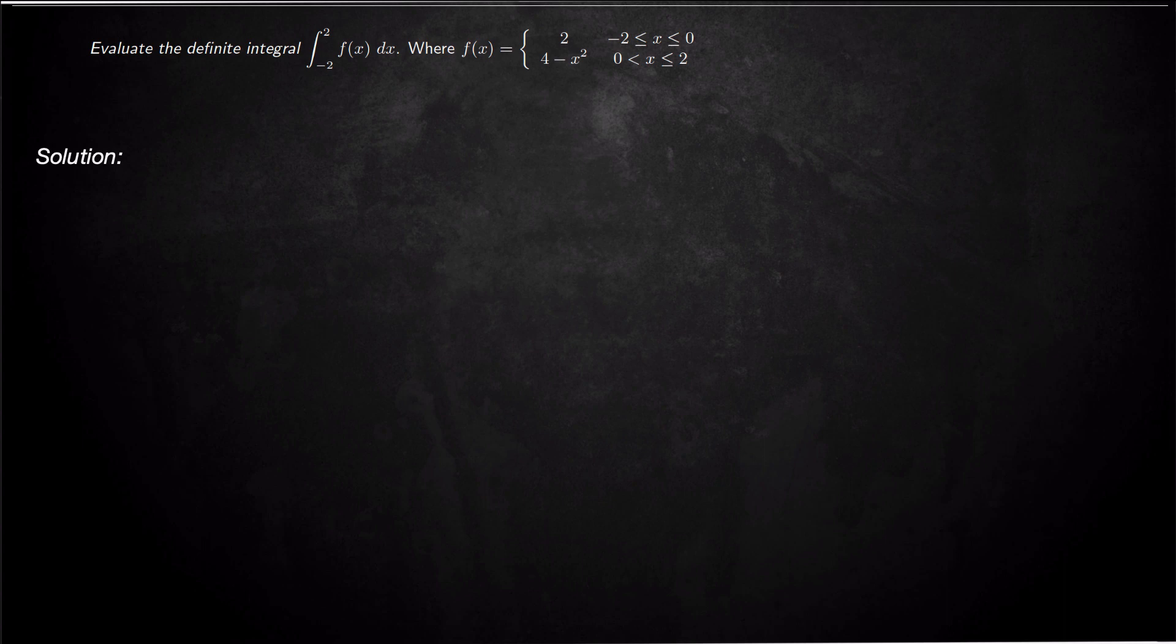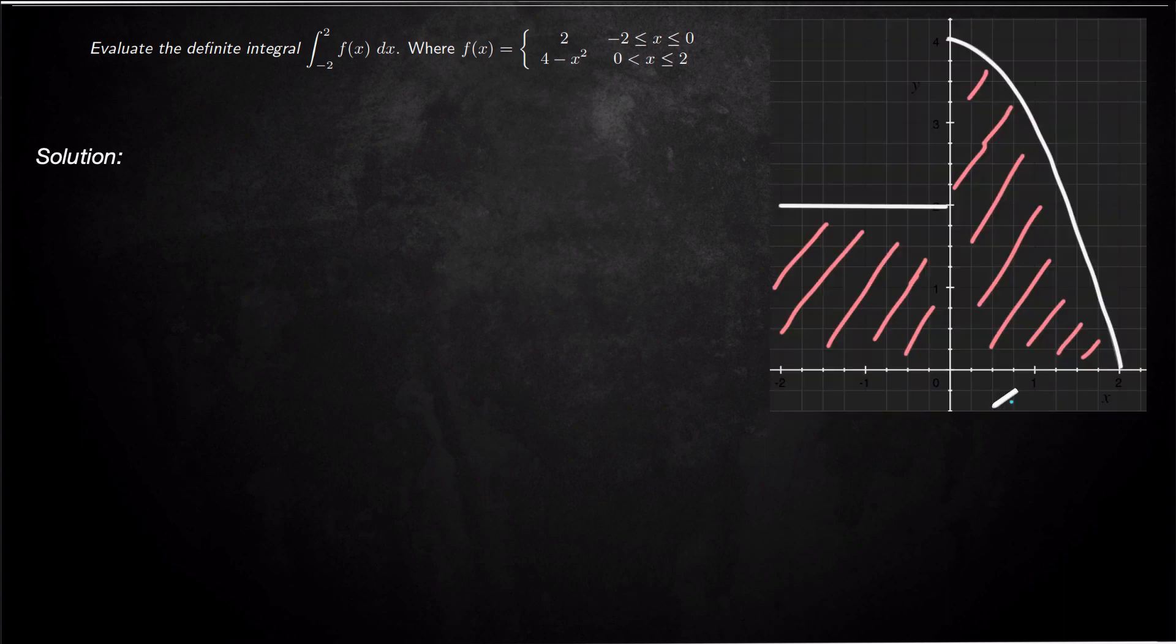And this piecewise function is actually a straight line for x between negative 2 and 0, so that's like this straight line over here. And then from 0 to 2, it's this parabola opening down that actually intersects the x-axis right here at 2. So this is 2 right here, and then over here this is negative 2.